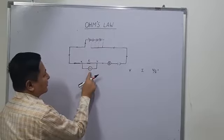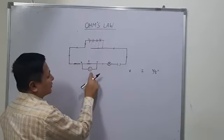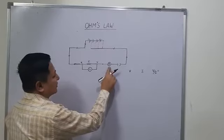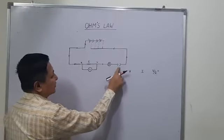This is a voltmeter which is connected in parallel and measures potential difference. This is an ammeter which measures current. This is the key.